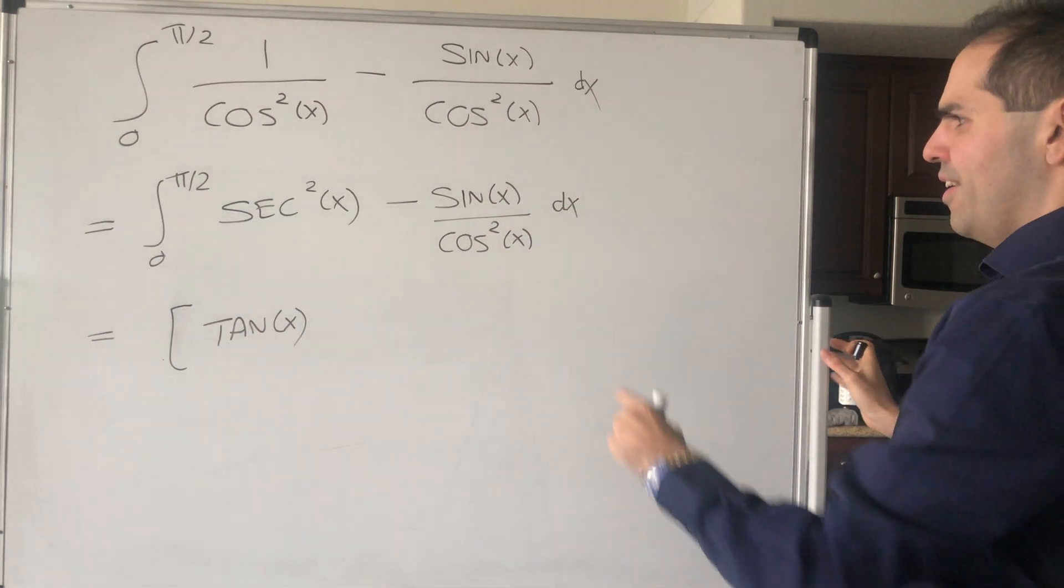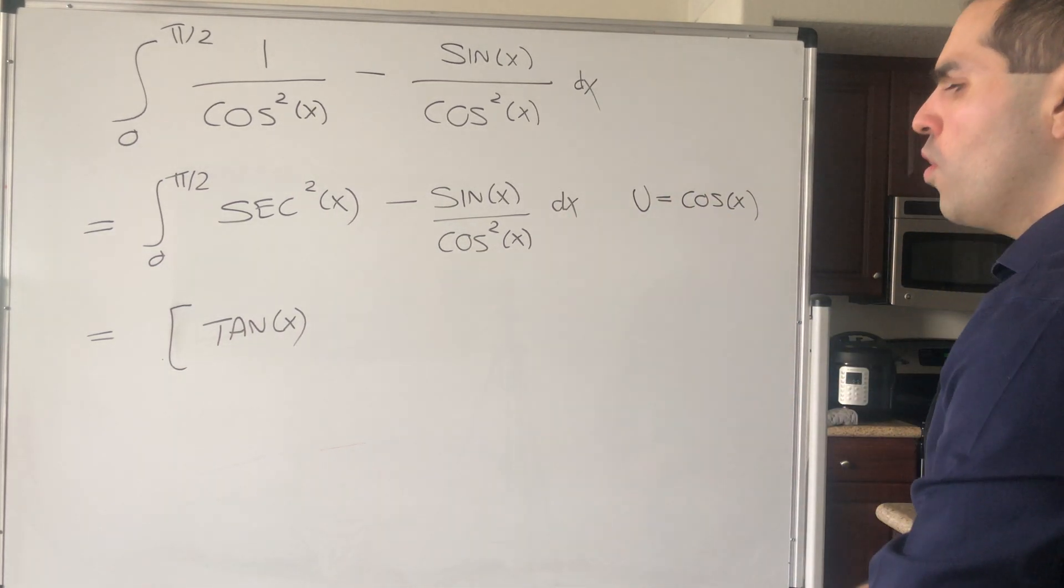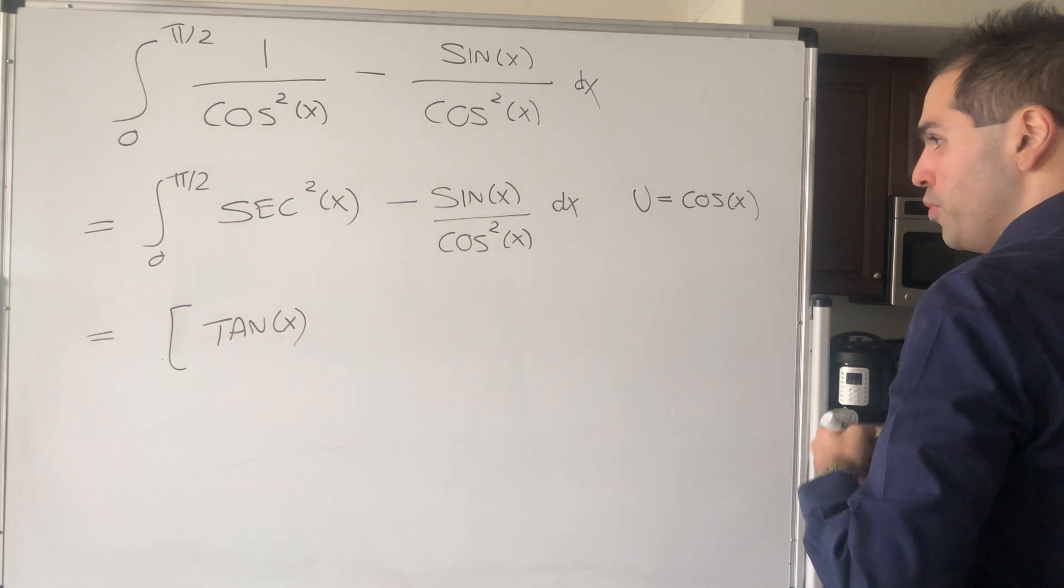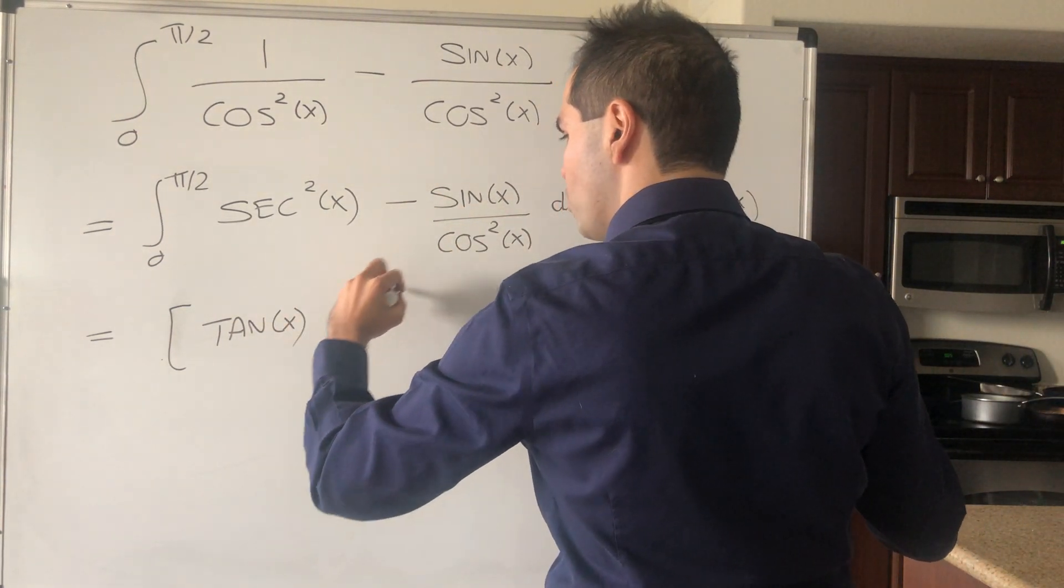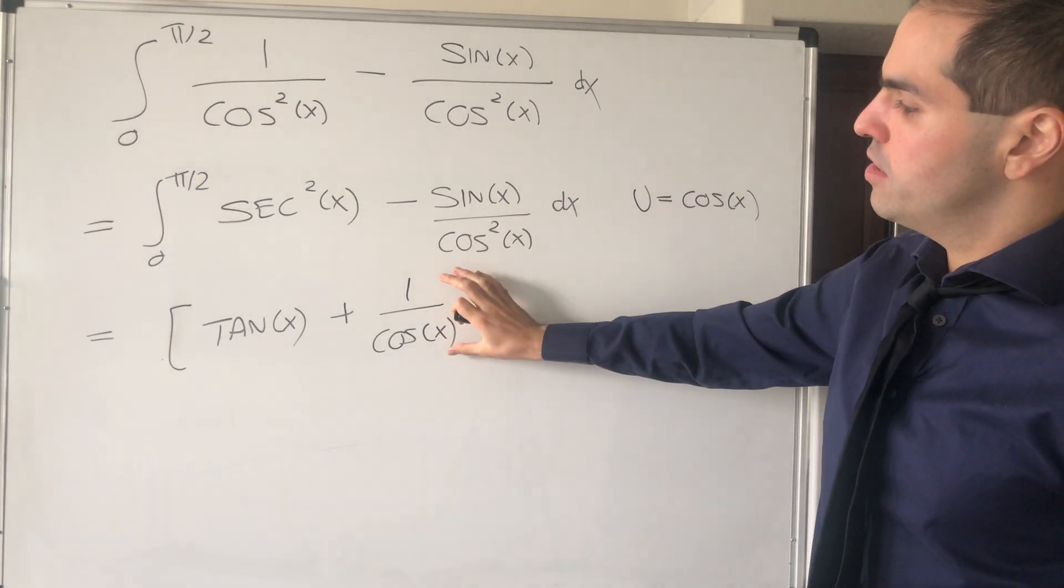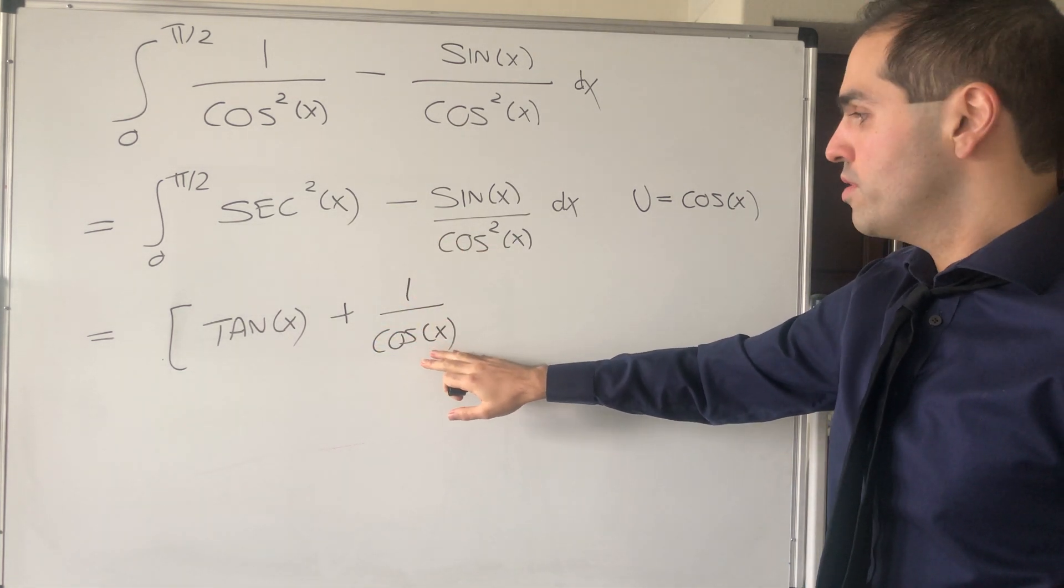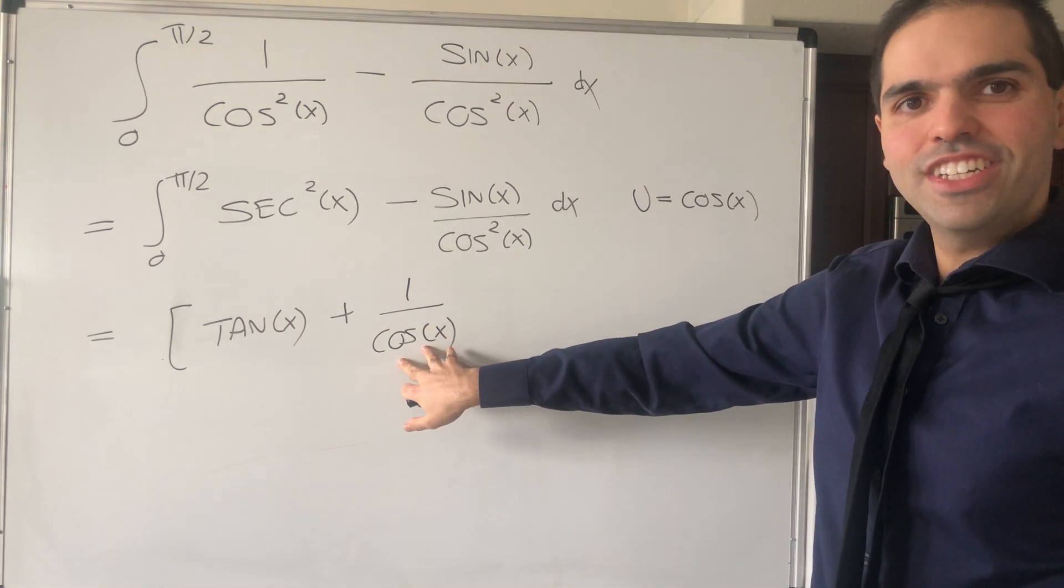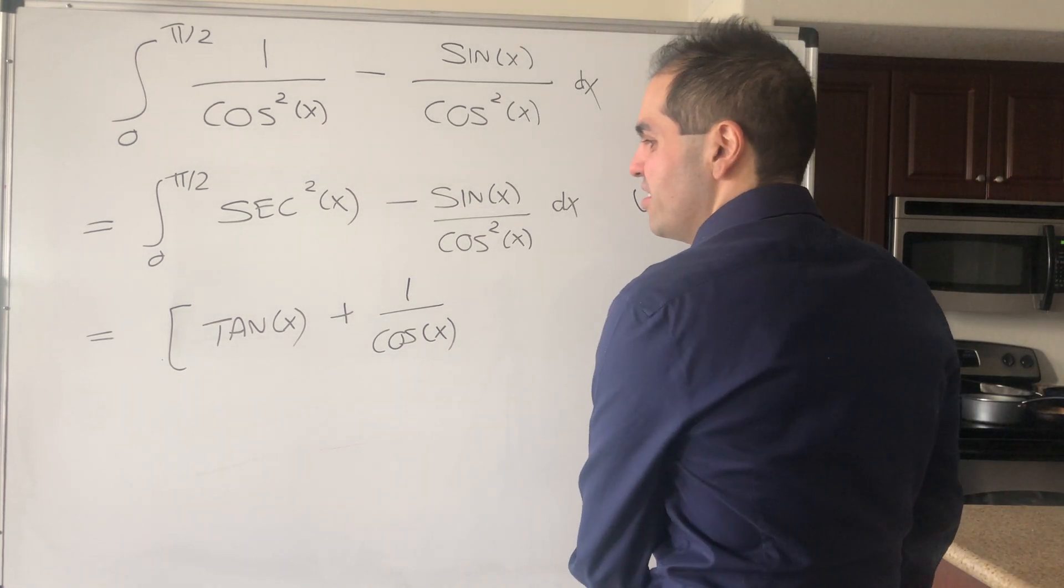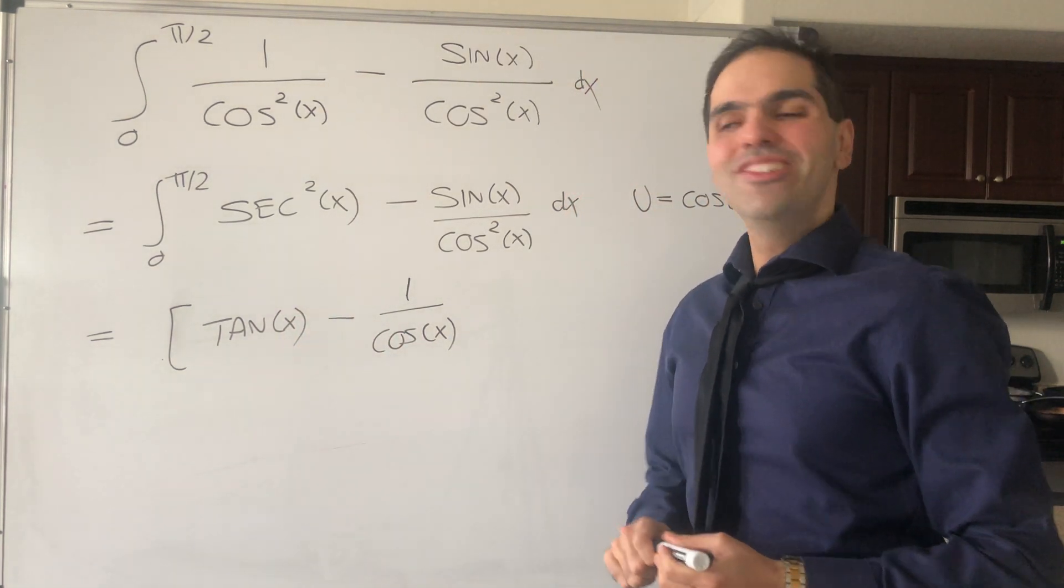Now, for this one, if you want, you can just use a u substitution, u equals cosine of x. Or, you can just kind of guess and check, if you'd like. So if you do, this looks a lot like plus 1 over cosine of x. But there's just a little issue here, because if you differentiate this, sure, you get a minus sine of x over cosine squared, but then you also have to differentiate this cosine, which would give you a plus sine. So to remedy this, you just do minus, which is a very famous application of u substitution.